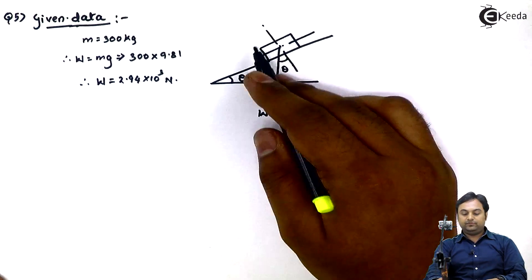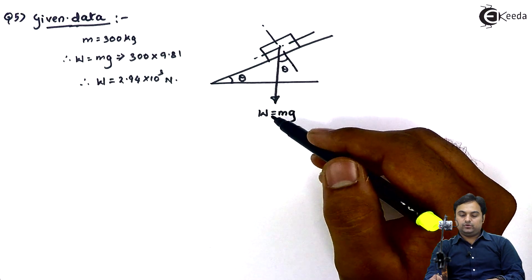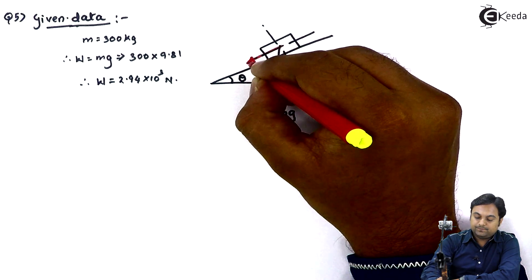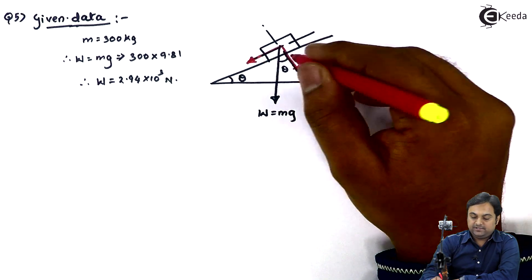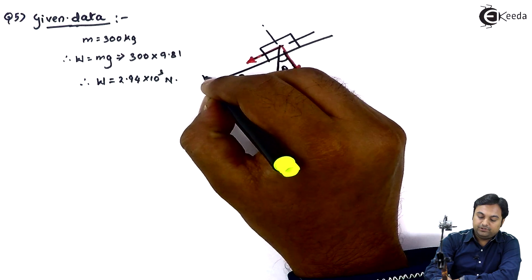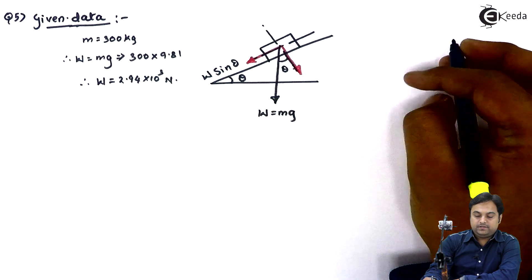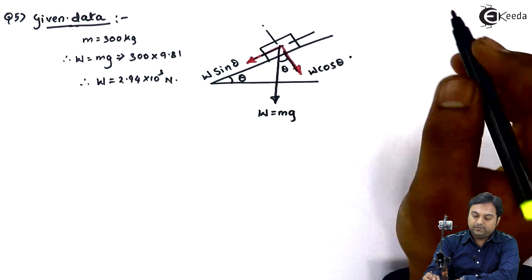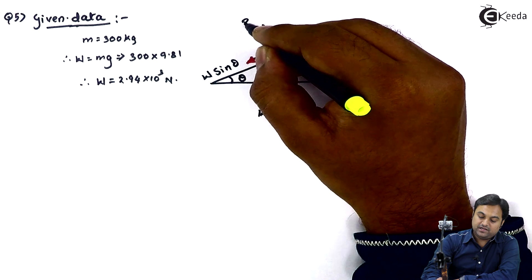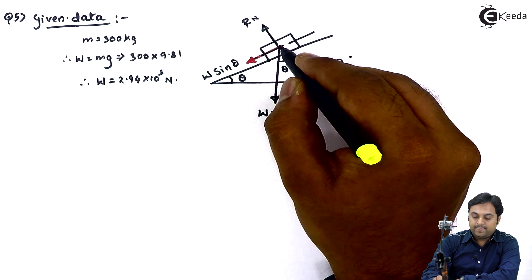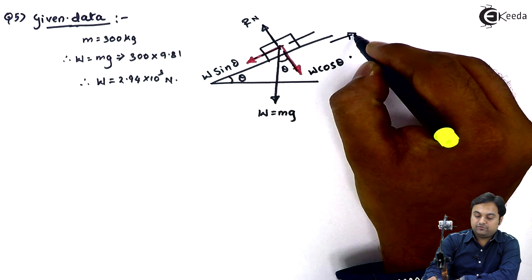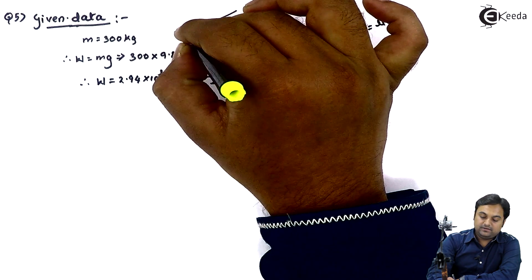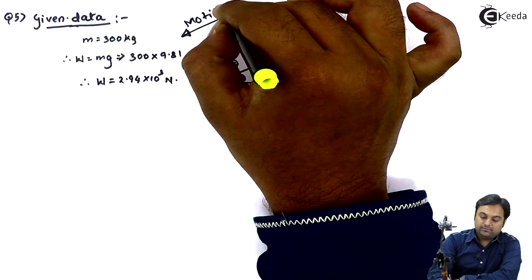Since this weight is acting vertically downwards and it is on a plane at an angle of theta, I will have two components of weight — one parallel to the plane and other perpendicular to the plane. Parallel to the plane that component will be W sin theta, and perpendicular to the plane it will be W cos theta, because inclination is with the vertical. Opposite to W cos theta I will have Rn. Because of W sin theta the block would be sliding downward, but friction force would try to keep it in the opposite direction to prevent sliding.